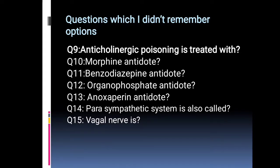Anticholinergic poisoning is treated with: morphine antidote, benzodiazepine antidote, organophosphate antidote, or enoxaparin antidote. The parasympathetic system is also called the S and vagal nerve system.